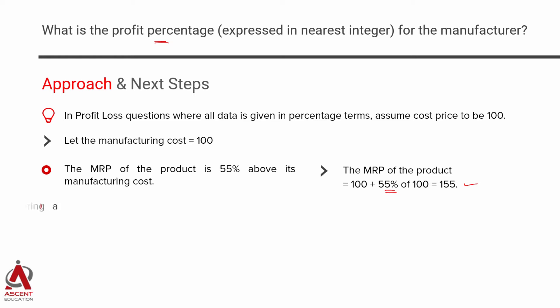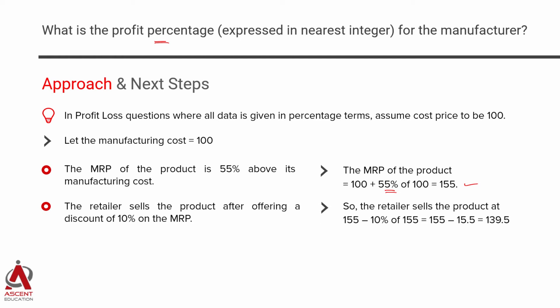The retailer sells it at a discount of 10% on the MRP. Our MRP is 155, so he offers a 10% discount, giving a discount of 15.5 on the MRP. So he is going to finally sell it at 139.5.